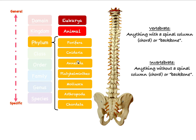We have Porifera, Cnidaria, Annelida, Platyhelminthes, Mollusca, Arthropoda, and Chordata. In general, all of these can be classified as either vertebrate or invertebrate. A vertebrate has a spinal cord or vertebral column — like us, we are vertebrates because we have a backbone. An invertebrate means you don't have a vertebral column. Now let's talk about each phylum individually and see what key details you need to know.